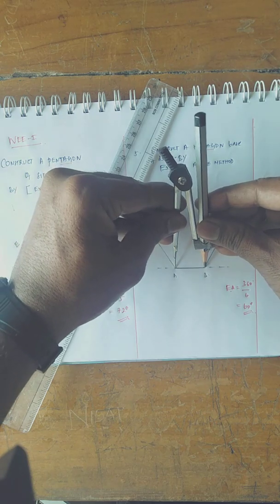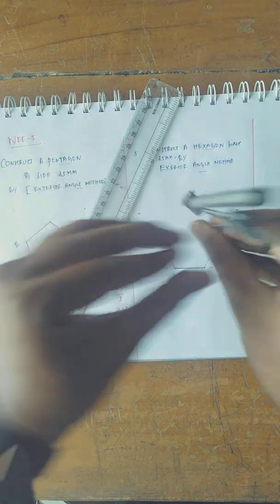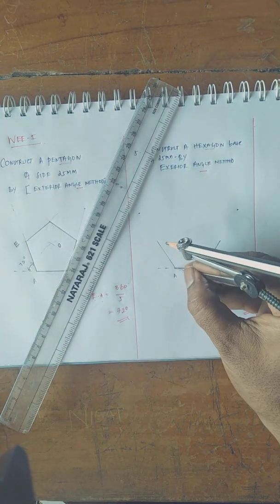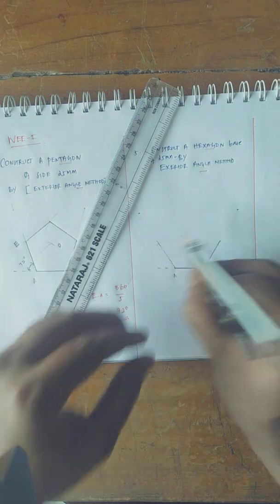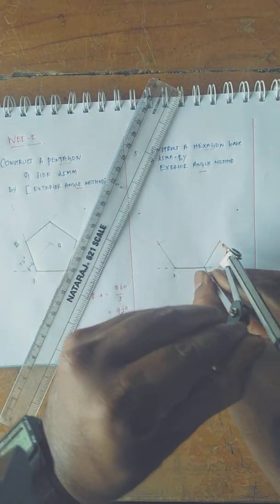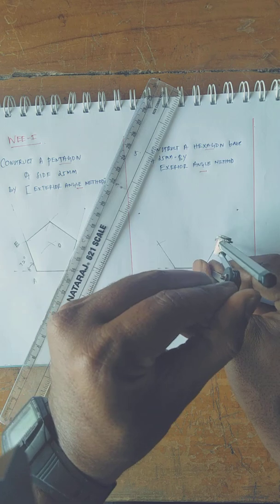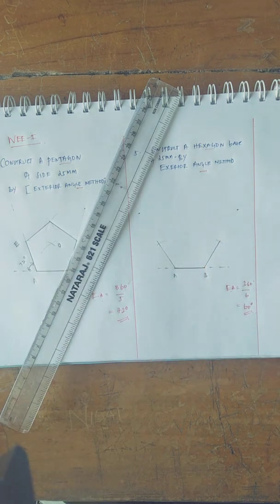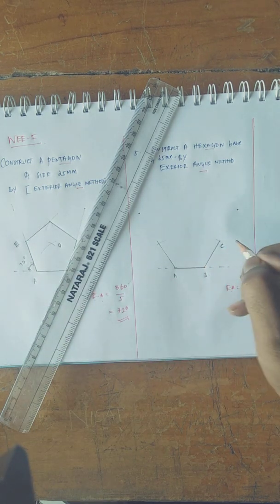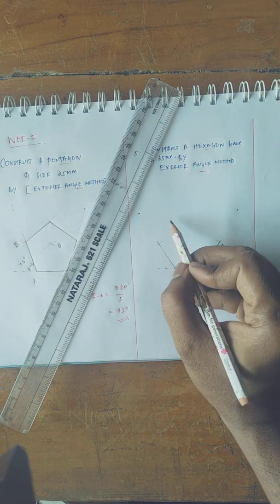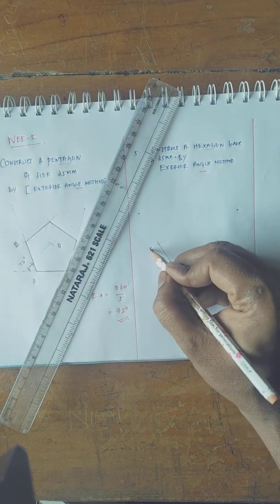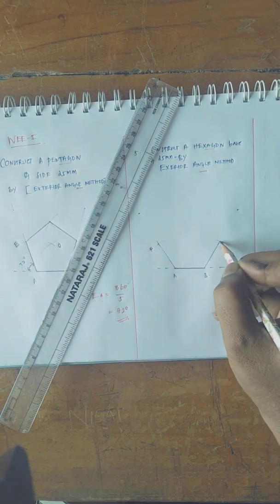You measure AB as 25 mm and keep A as center with 25 mm as radius. Similarly, keep B as center with 25 mm as radius. We got two points that you can name A, B, C, D will come here, E will come here, F. I am specifying these two points as F.